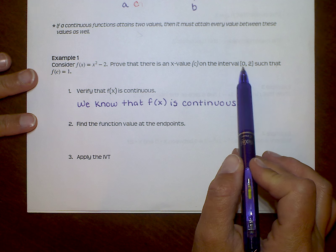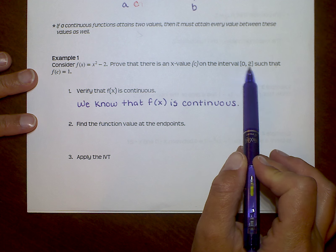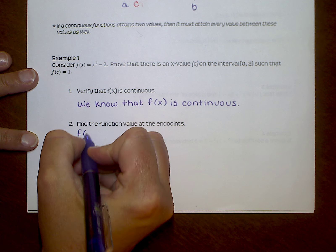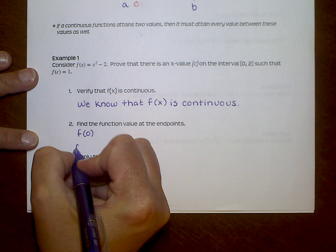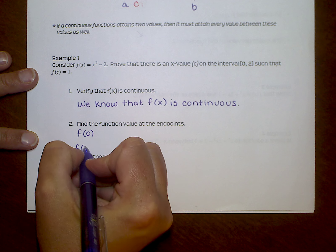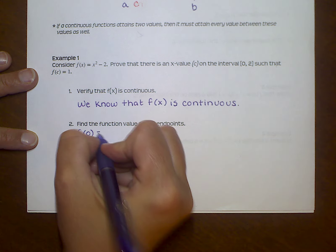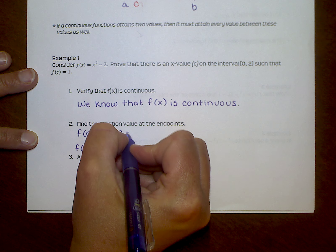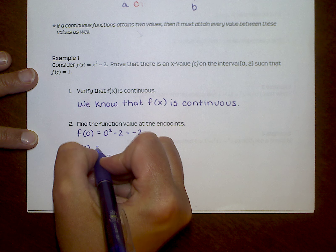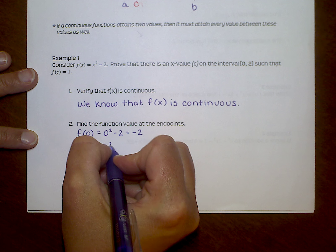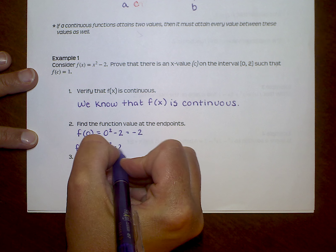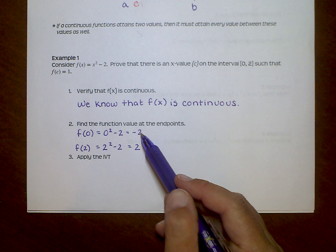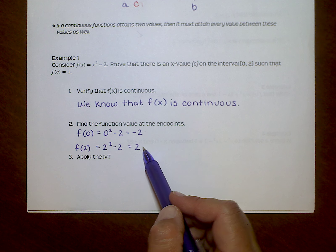Now I want to find the function value at the two endpoints. So I'm going to find F of zero and F of two. F of zero would be zero squared minus two, so that's negative two. And F of two is two squared minus two, so that's four minus two, which is two. So these are my Y values at the two endpoints.